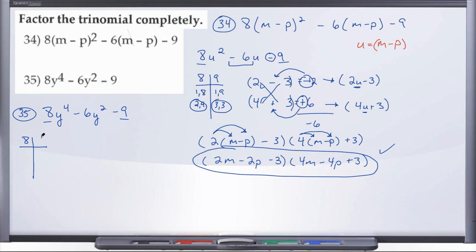And if you feel like this problem is familiar to you, you're not going crazy. Take a look at number 34. We had 8, minus 6, minus 9. So the only difference here, instead of a quantity squared and a single quantity, now we're dealing with y to the 4th and y squared. So all of our factors and numbers are going to be the same here.